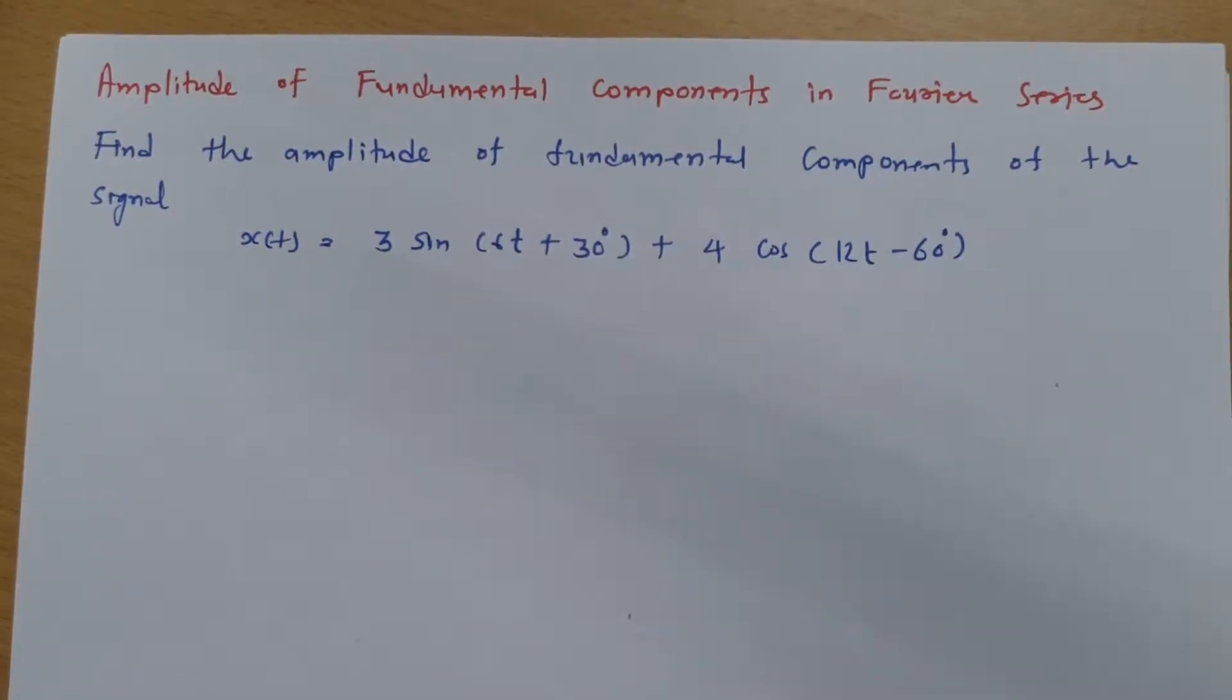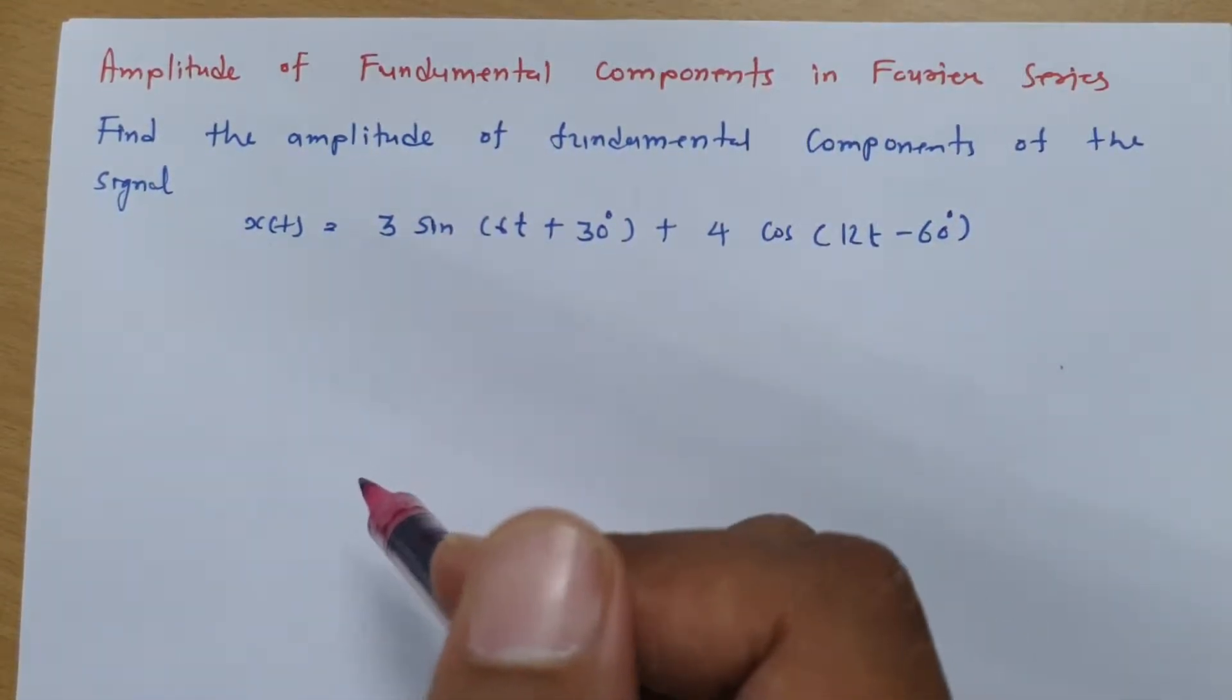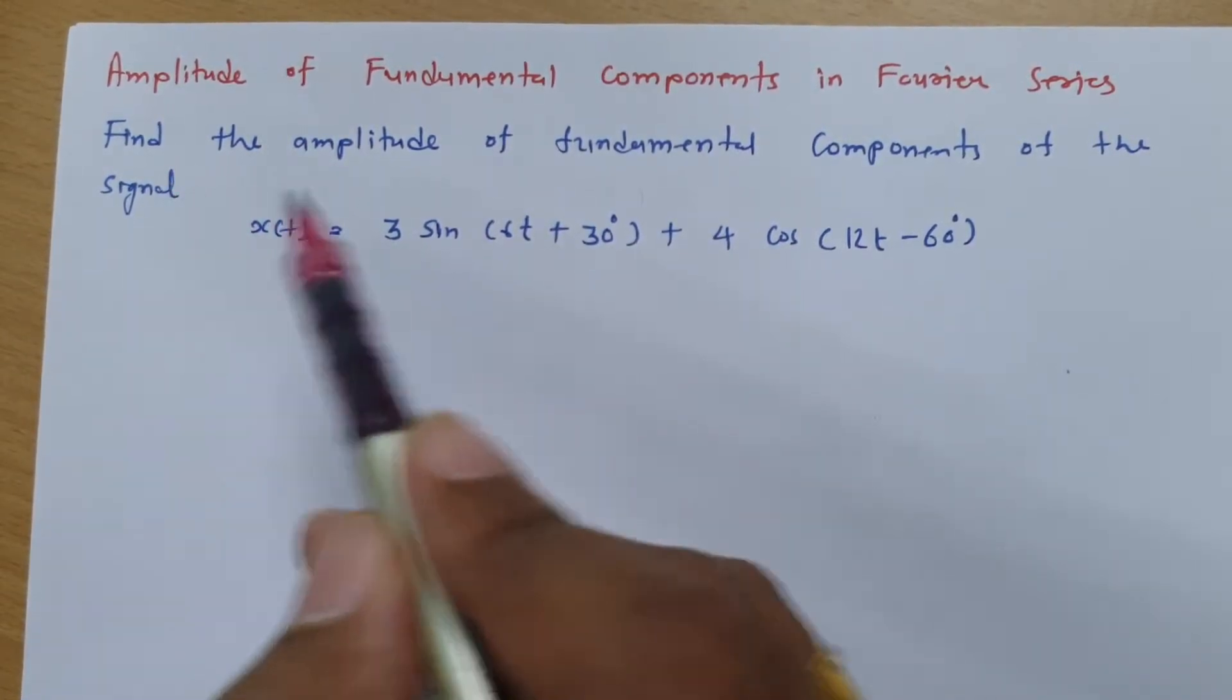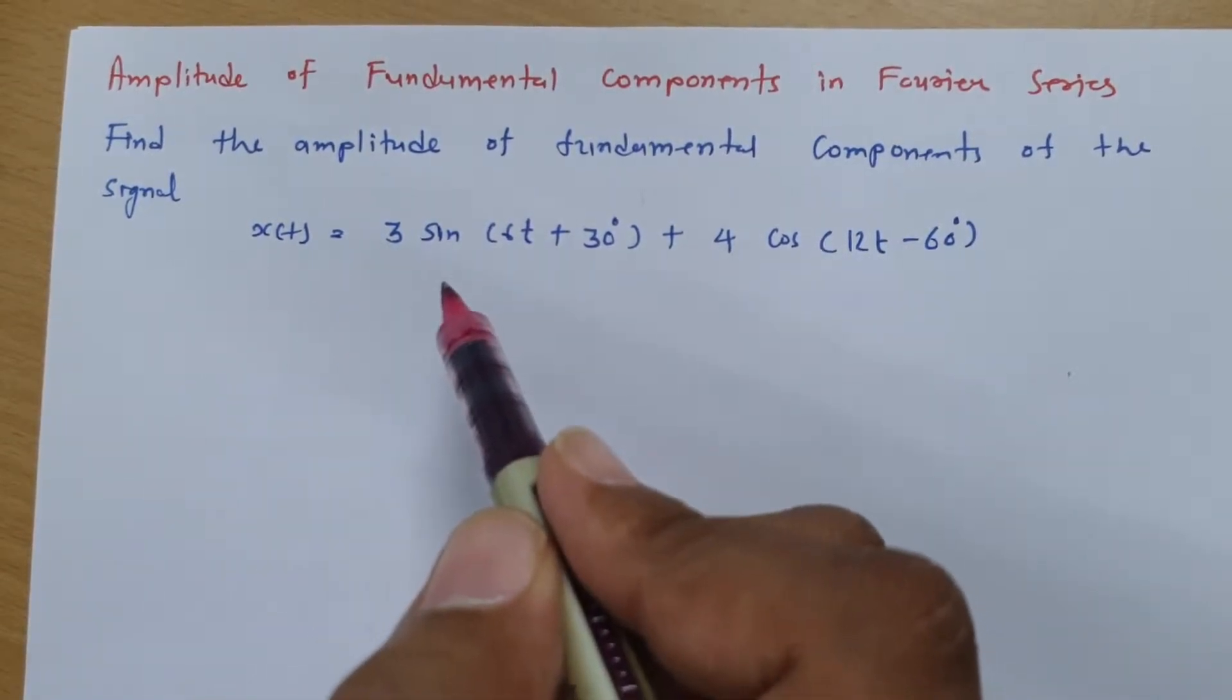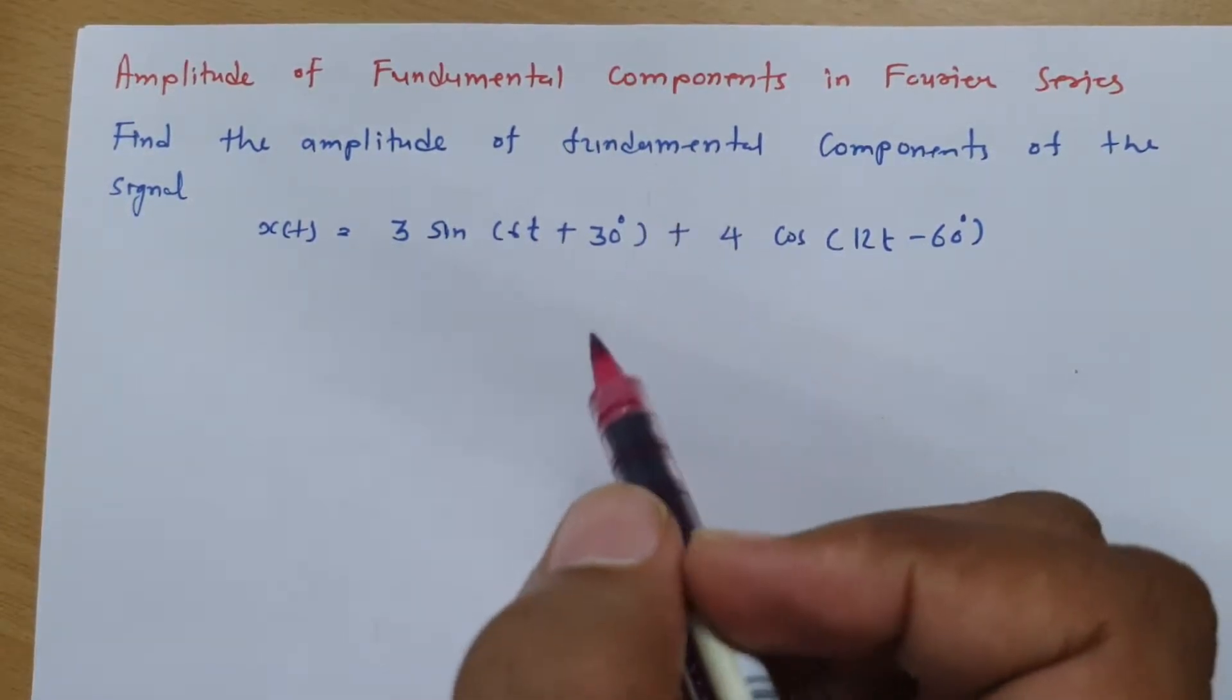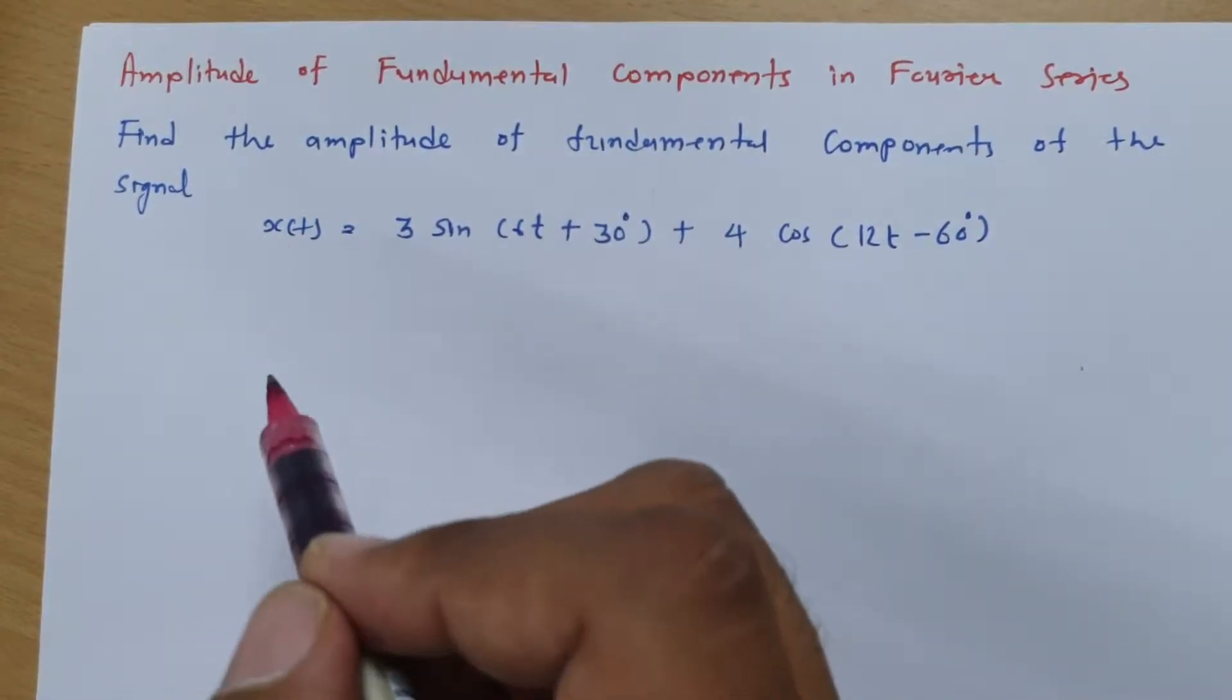Welcome to signal and system lecture series. Here I will be explaining amplitude of fundamental components in Fourier series. So how to identify amplitude of fundamental components in given Fourier series. So to explain that, this is my question, find the amplitude of fundamental component of signal given by x(t) = 3sin(6t + 30°) + 4cos(12t - 60°). So how to identify amplitude. Now see before I explain this example solution, first of all you should know some basics which I am going to explain now.